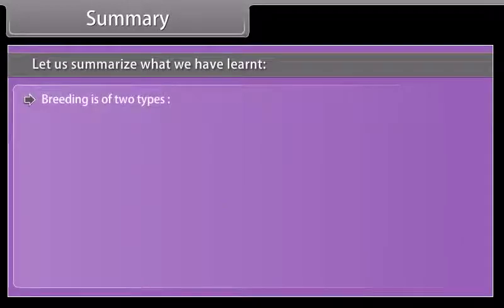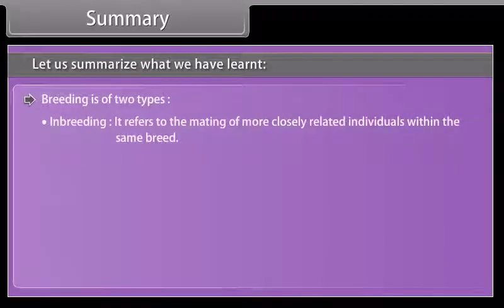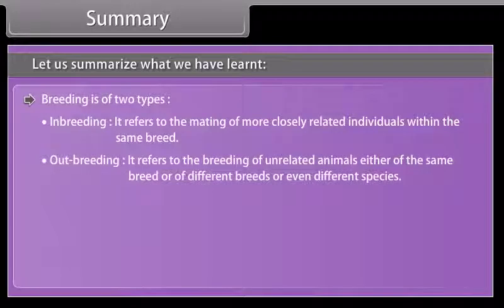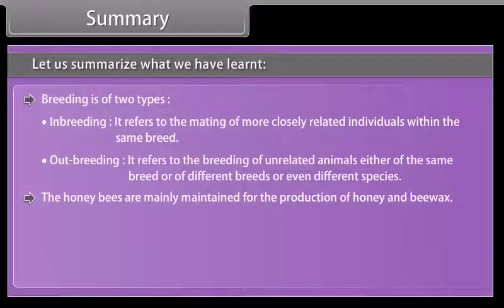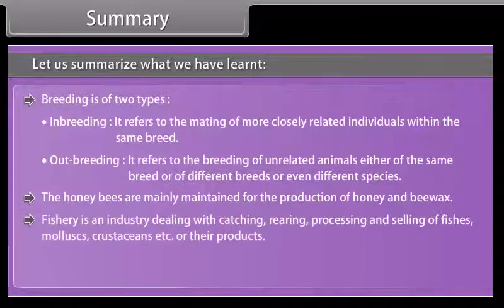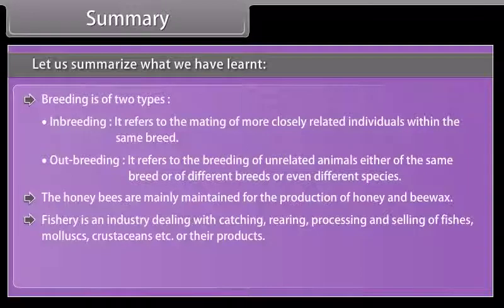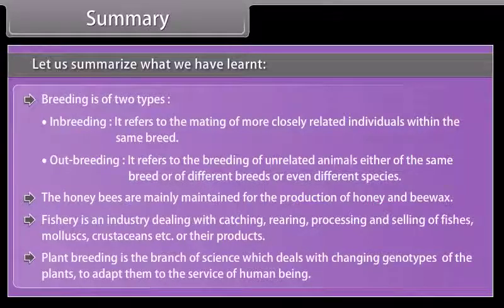Breeding is of two types: Inbreeding refers to the mating of more closely related individuals within the same breed. Outbreeding refers to the breeding of unrelated animals, either of the same breed, different breeds, or even different species. Honeybees are mainly maintained for the production of honey and beeswax. Fishery is an industry dealing with catching, rearing, processing, and selling of fishes, mollusks, crustaceans, etc., or their products. Plant breeding is the branch of science which deals with changing genotypes of plants to adapt them to the service of human beings.